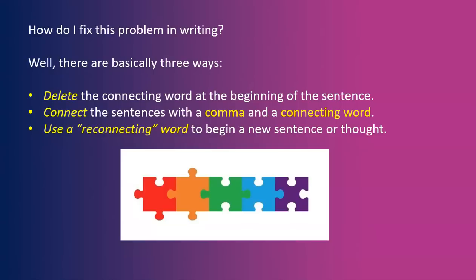How do you fix this problem in writing? There are basically three ways. Number one: delete the connecting word at the beginning of the sentence. Two: connect the sentences with a comma and a connecting word. Three: use a reconnecting word to begin a new sentence or thought.